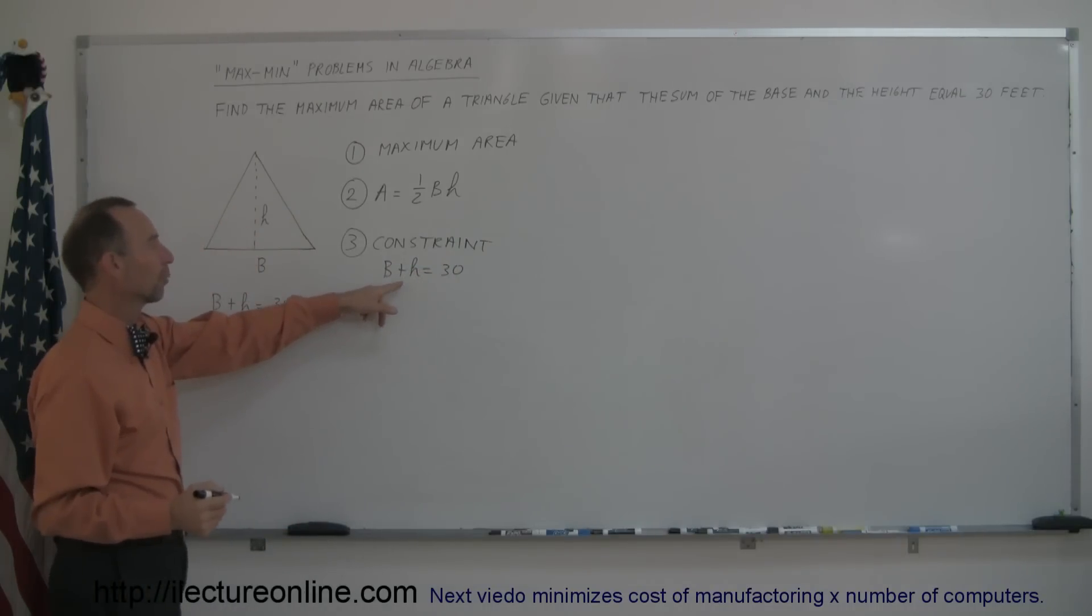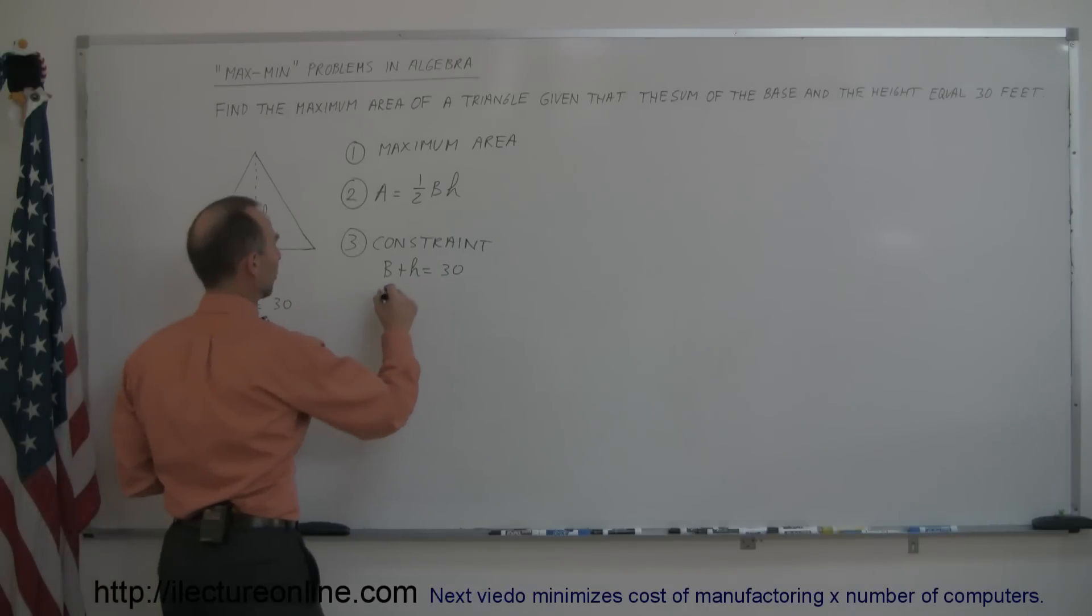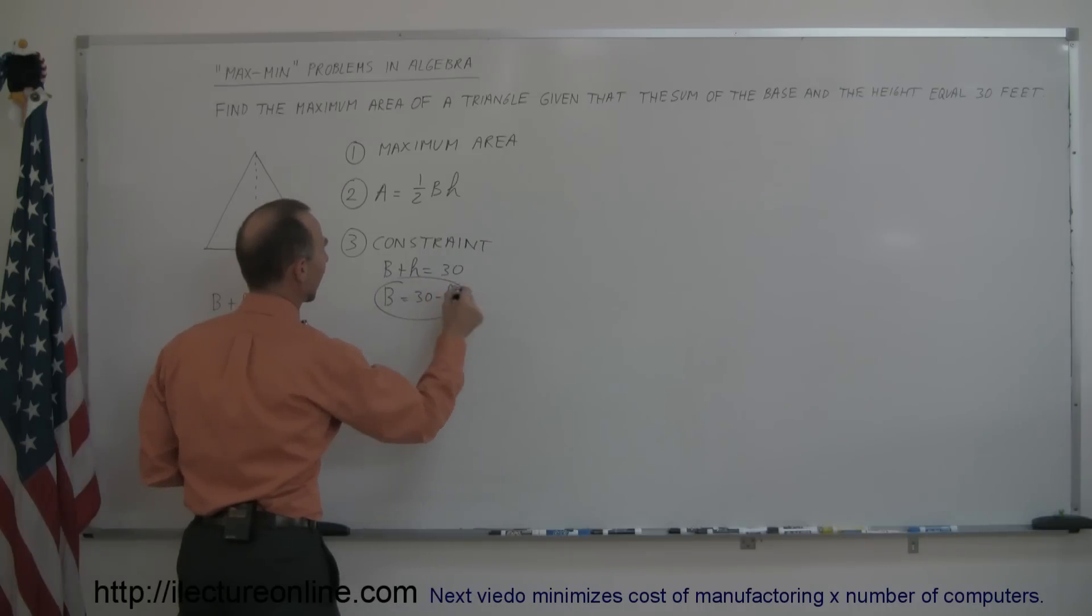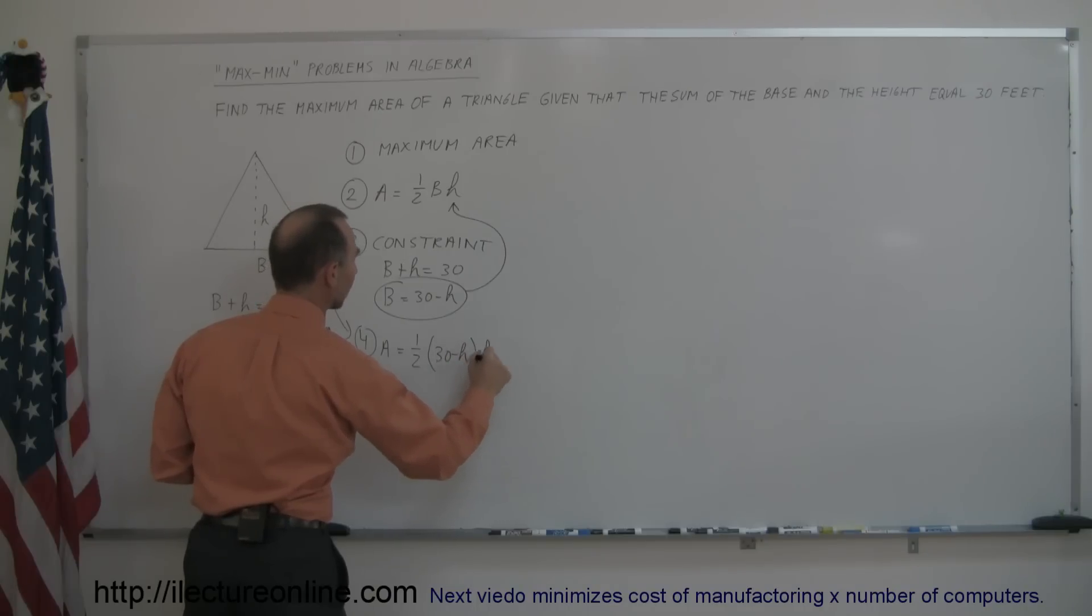And now if we solve this equation for one of the two variables, in this case we can solve for the base, equal 30 minus the height, and we plug this back in the original equation. We now have a new equation for the area, which is now dependent on only one variable, so 30 minus h times h.